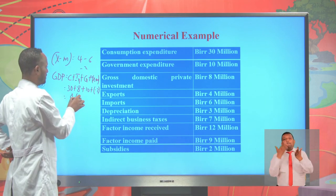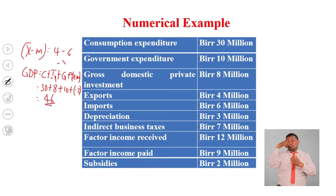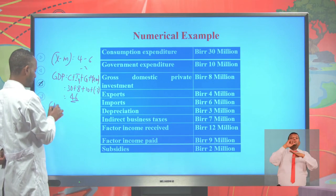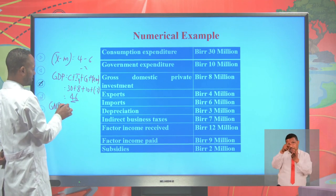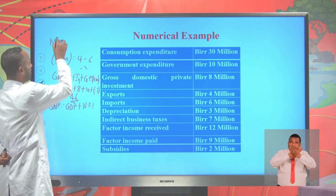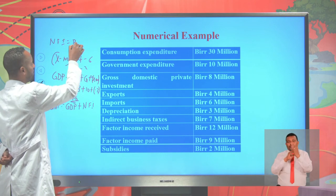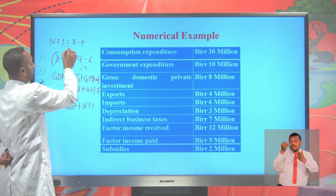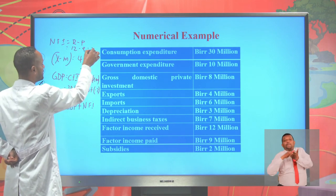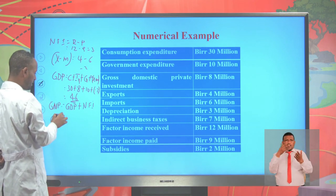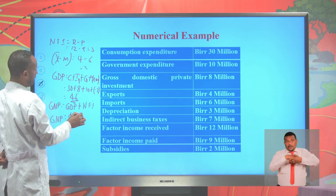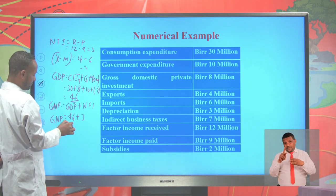Once you get the GDP, it is simple to calculate the gross national product at market price. GNP at market price equals GDP at market price plus net factor income. Net factor income equals factor income received minus factor income paid, which is $12 million minus $9 million, giving $3 million. So GNP at market price equals $46 million plus $3 million, which equals $49 million.